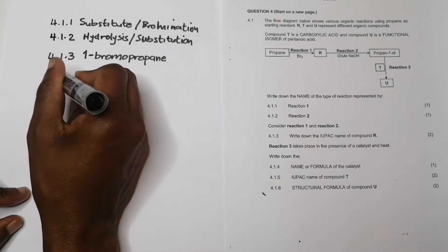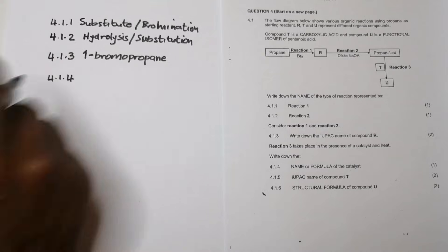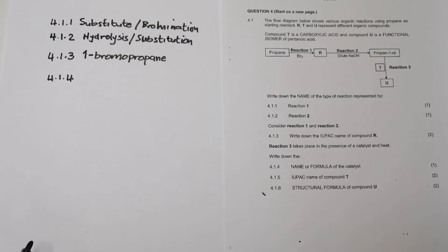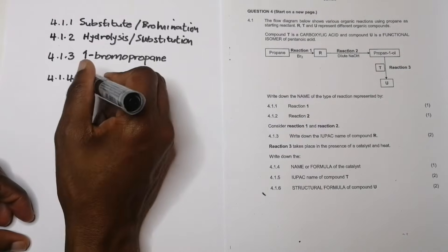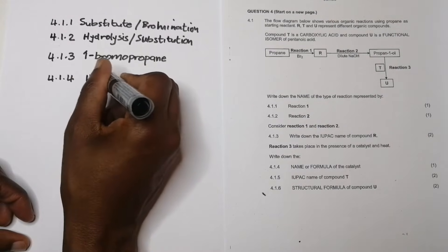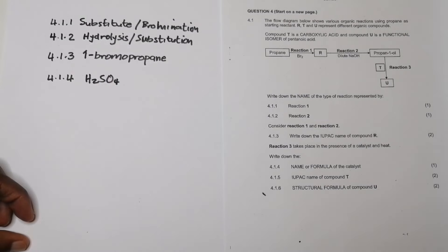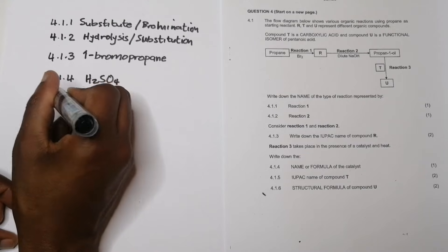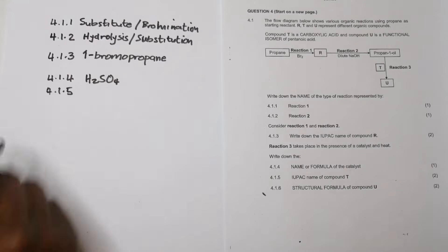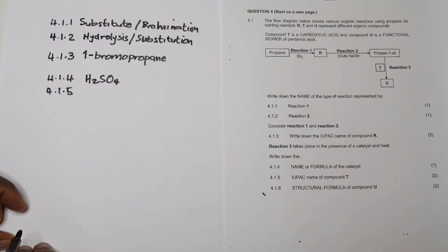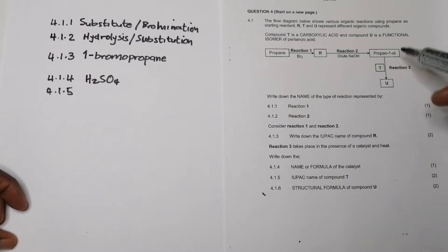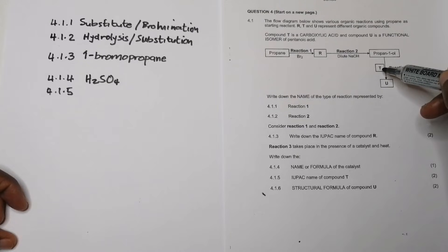Question 4.1.4 asks for the name and formula of the catalyst. Remember, esterification happens in the presence of an acid catalyst — sulfuric acid, H₂SO₄. Question 4.1.5 asks for the IUPAC name of compound T. We took an alcohol and reacted it with a carboxylic acid.